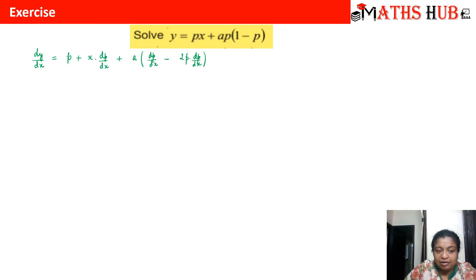Now you can replace dy by dx with p and you can see that p will get cancelled from both sides. The term that you will get is x times dp by dx plus a times dp by dx minus 2ap times dp by dx equals 0.